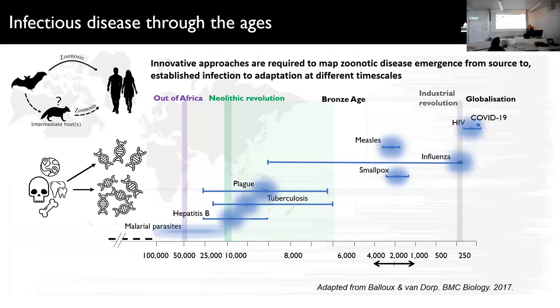One possible solution for looking far back in time is to search for evidence of infections from the past in genomic material. In and amongst the sequencing reads generated from an ancient sample, there's not just DNA endogenous to the host but also a huge repertoire of microorganisms. If we can disentangle which reads belong to different pathogens of interest, we can push back what we can say using evolutionary frameworks by filling in with direct ancient observations.